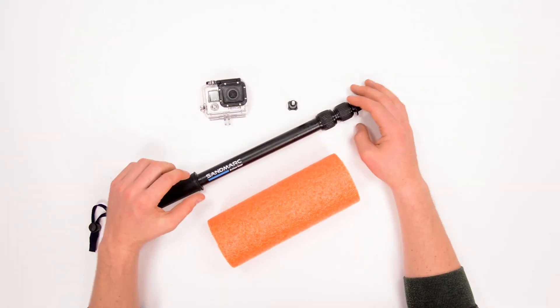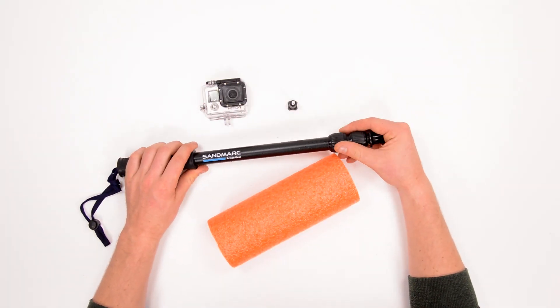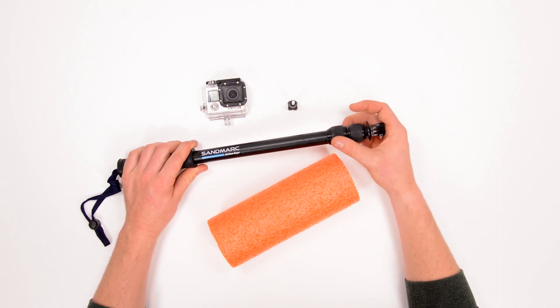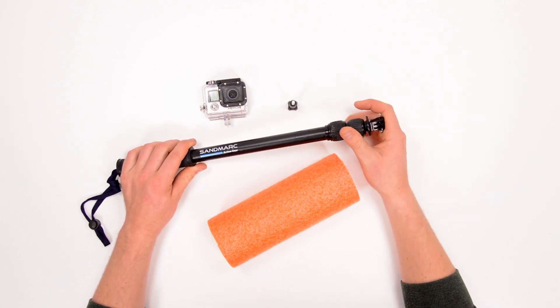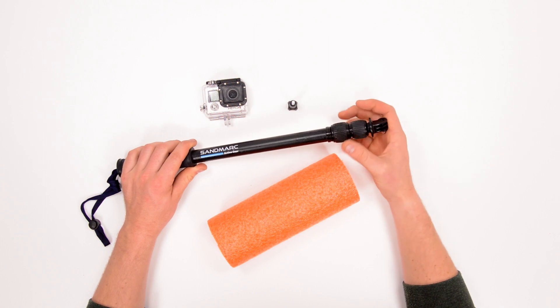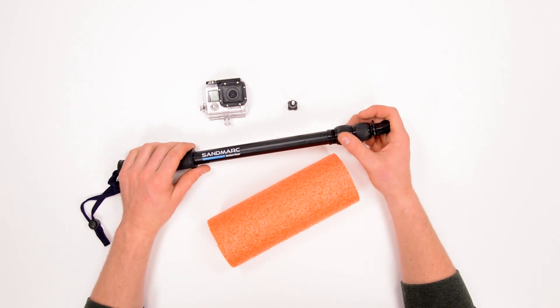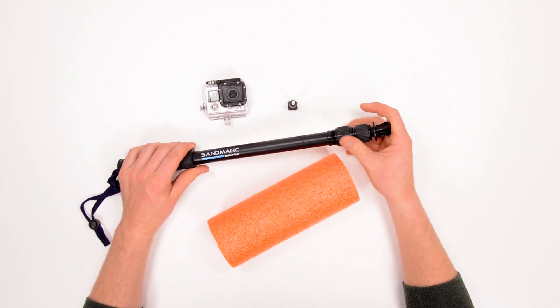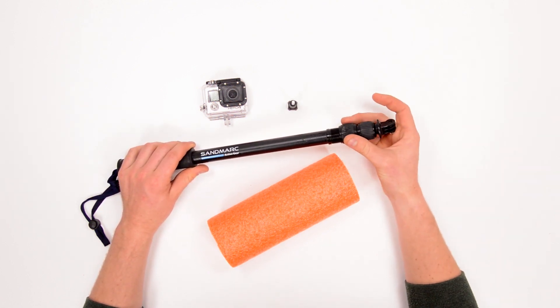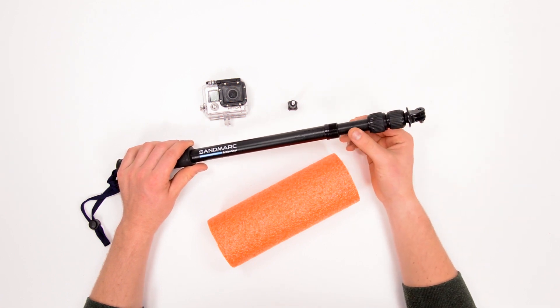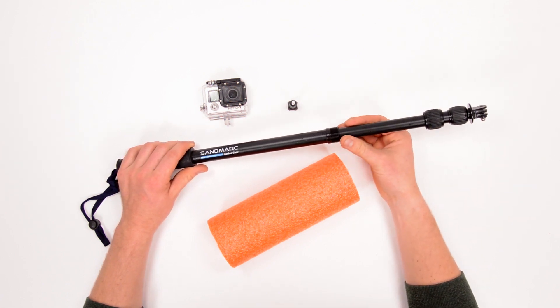So to do this we're going to take this Sandmark Action Gear pole and we're going to unscrew this first center tensioning arm a lot. So we're just going to keep unscrewing it. Now this mount works with almost any GoPro pole that looks similar to this and if your pole doesn't come apart like this one does, stay tuned to the end of the video because I have another method of making a pole float very similar to this.